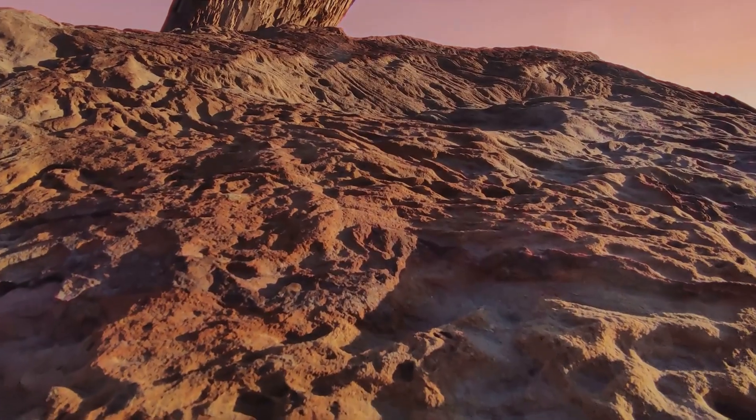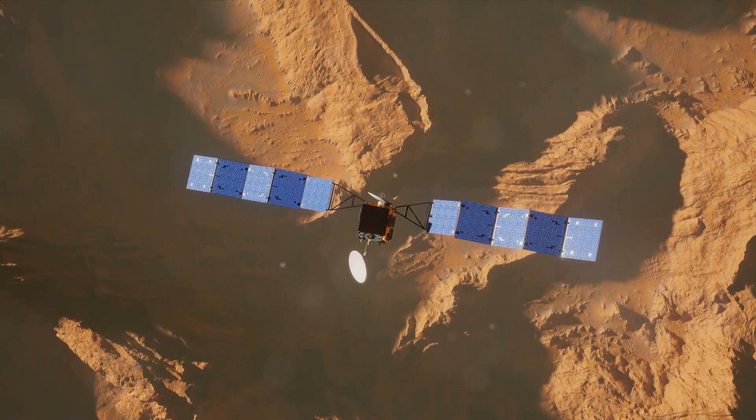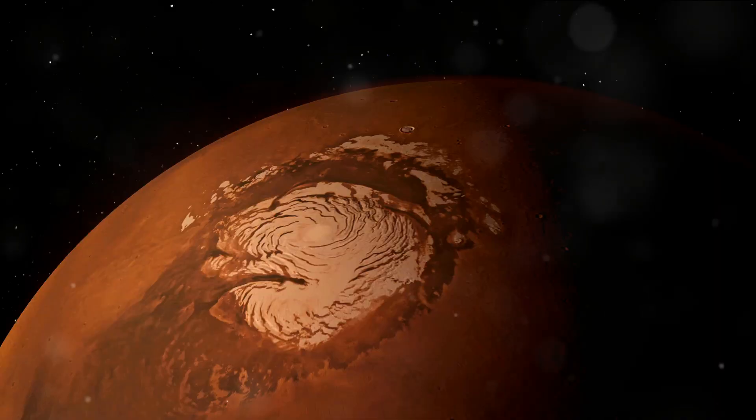And finally, at number 1, we have Mars' elusive water mystery. Evidence suggests that Mars once held vast oceans, rivaling Earth's own. But where did all that water go?